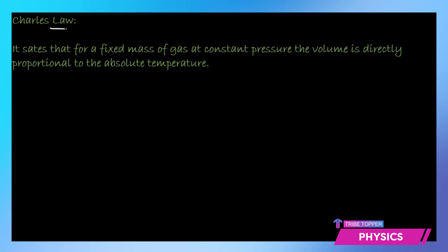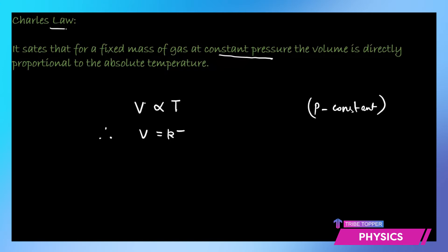The next one is Charles' Law. This states that for a fixed mass of gas at constant pressure, the volume is directly proportional to the absolute temperature. Pressure is constant and not going to change, while volume and temperature are varying. So volume is directly proportional to T, meaning volume equals some constant k times T, giving the ratio V/T as a constant.